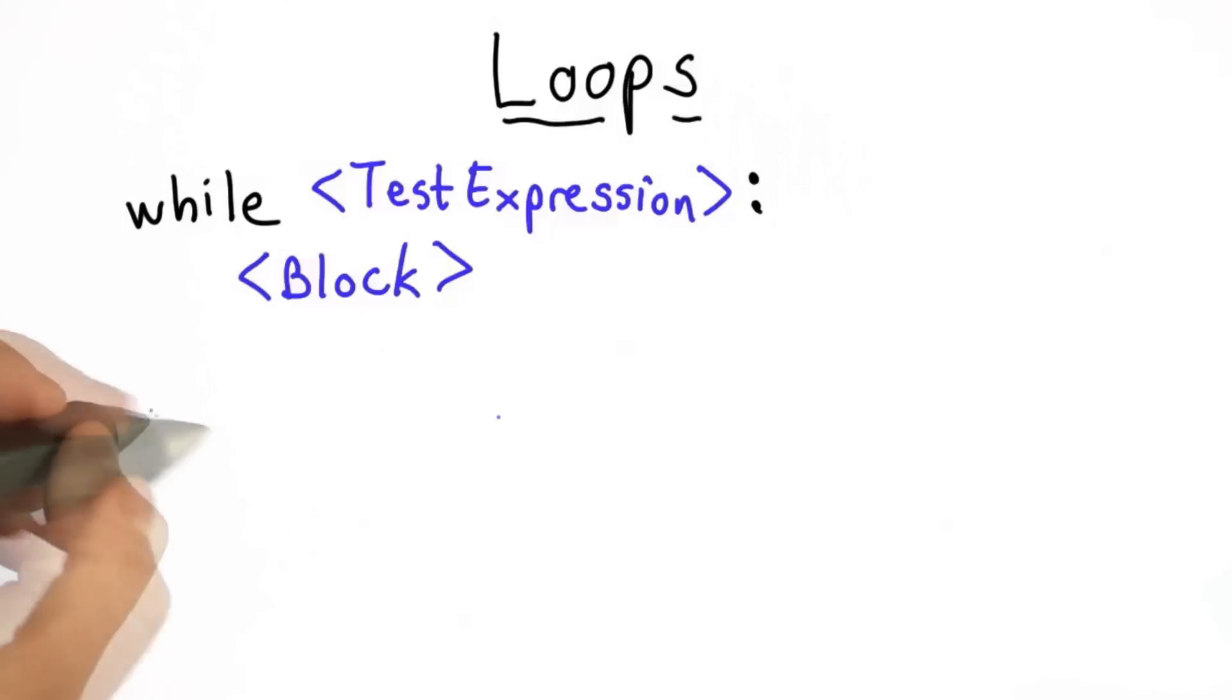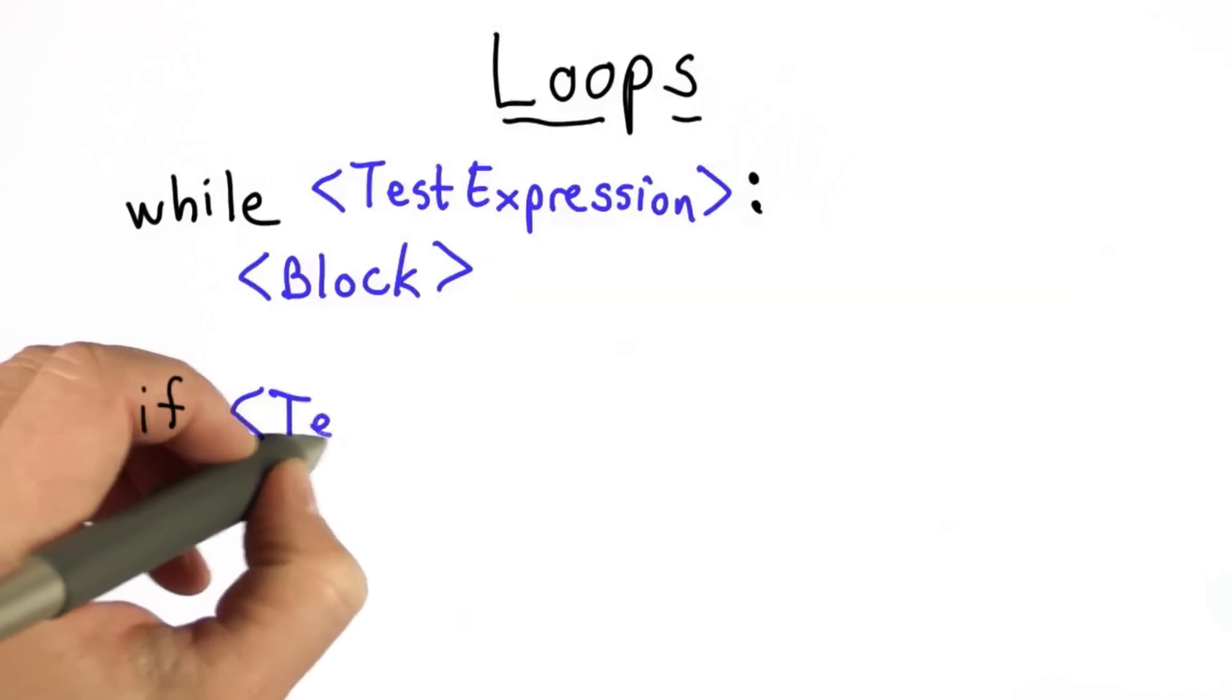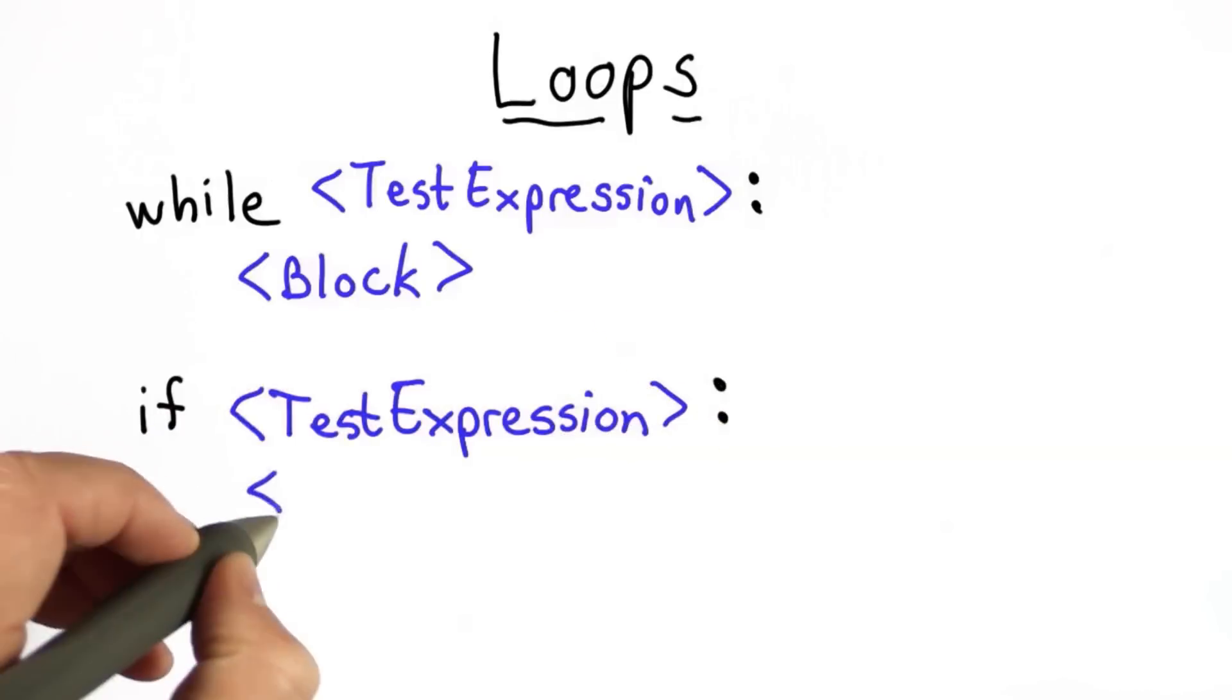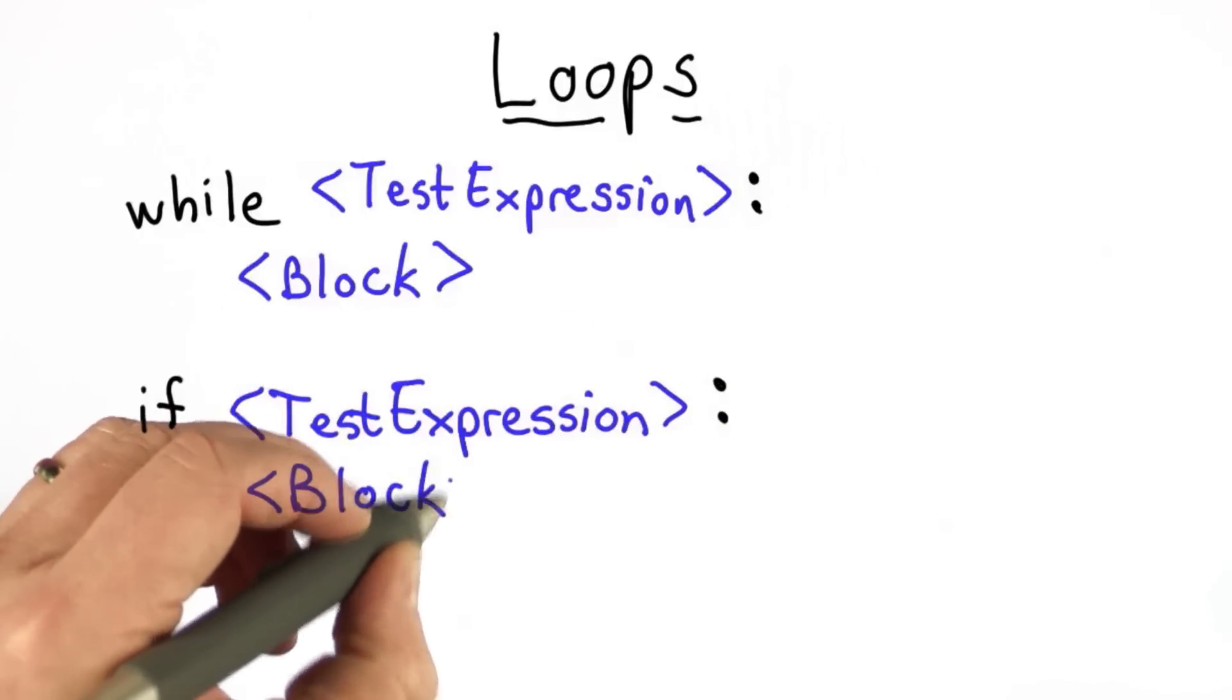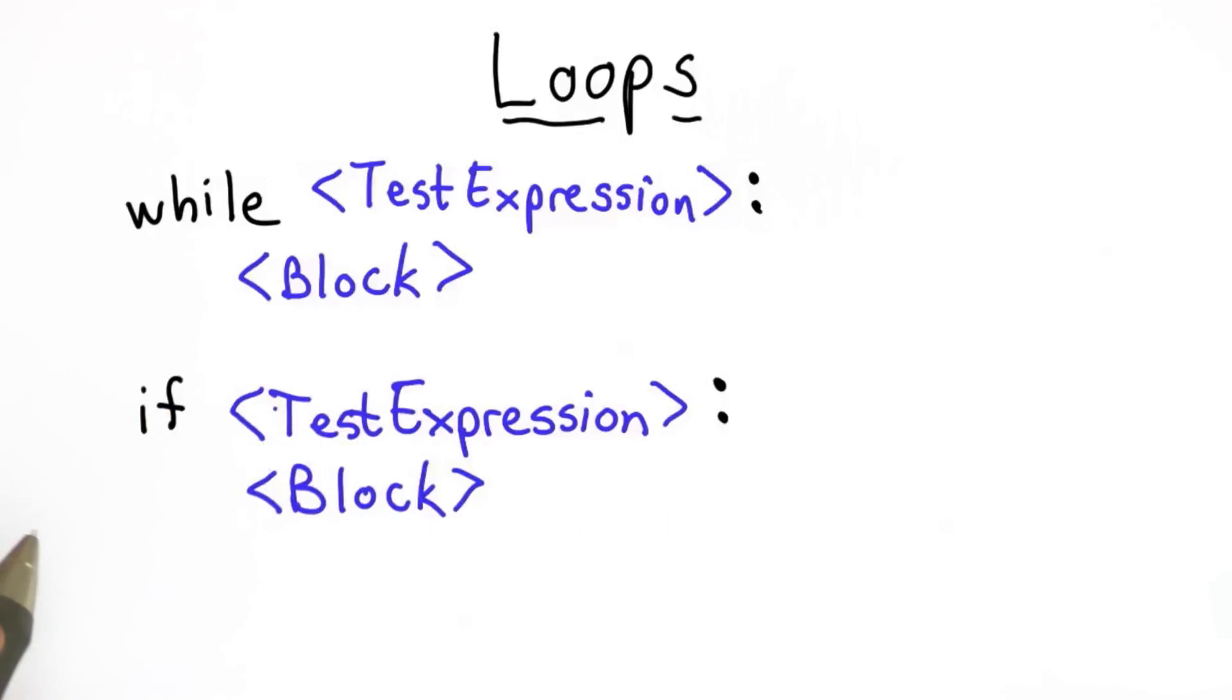This is very similar to the if statement, so as a reminder, here's what the if statement looked like. We had an if, followed by a test expression, followed by a colon, and then an indented block, which is a list of statements that executes whenever the test expression evaluates to a true value.